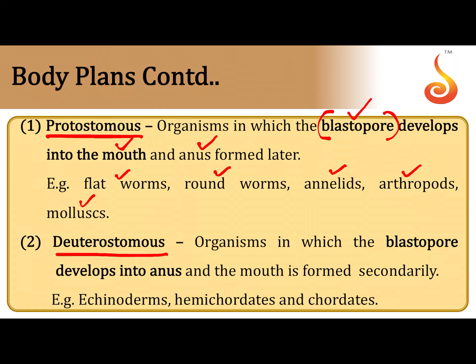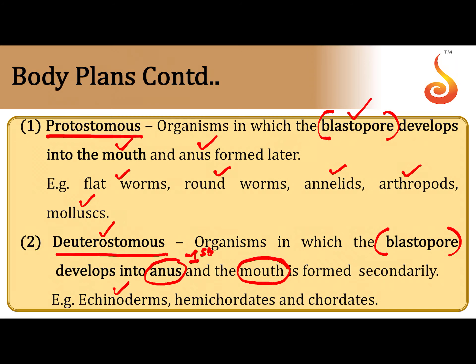In deuterostomes, which are the more advanced and evolved animals, the anus is formed first during embryonic development and the mouth is formed later. The blastopore in these organisms becomes the anus. This is seen in higher phyla such as Echinodermata, Hemichordata, and the phylum to which humans belong — phylum Chordata.